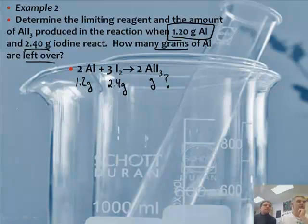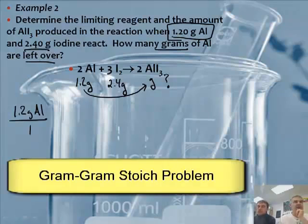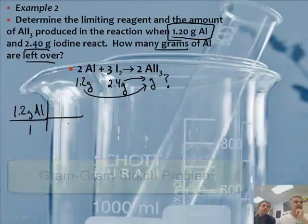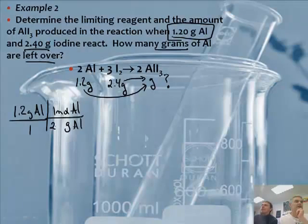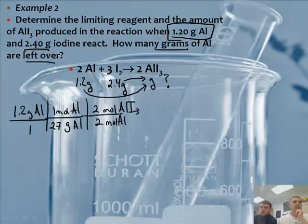I'm going to try and write small here because this is going to take a lot of space. Starting with 1.2 grams of Al over 1, I'm going to convert grams of Al to grams of AlI₃. First, convert grams of Al to 1 mole of Al — the molar mass is 27.0 g/mol. Then convert moles of Al to moles of AlI₃, which is a 2-to-2 ratio.